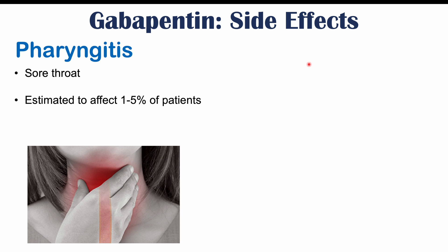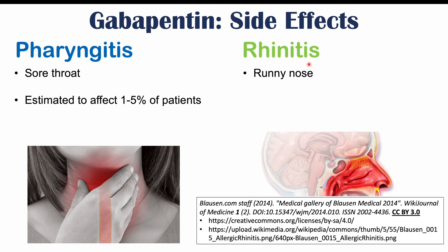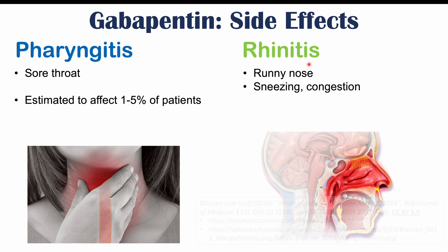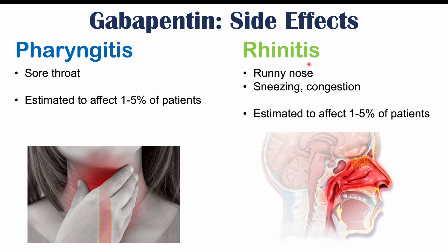Some side effects that may resemble an infection include pharyngitis — a sore throat — and rhinitis — runny nose, sneezing, or congestion — both estimated to occur in 1 to 5% of patients. Most of these side effects are very rare. The more common ones discussed earlier in this lesson are drowsiness, fatigue, and dizziness. The others covered later are much less likely to occur.